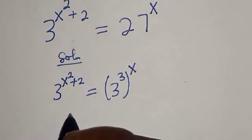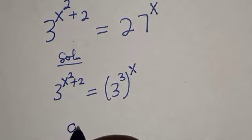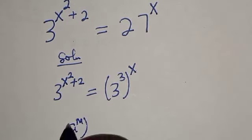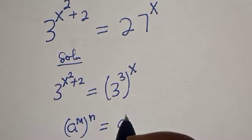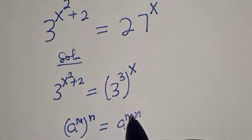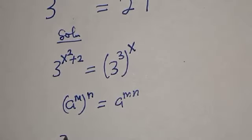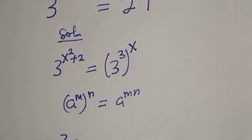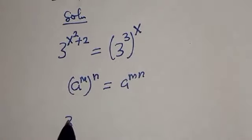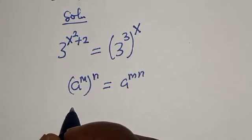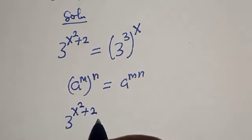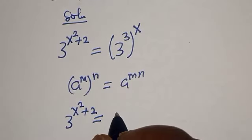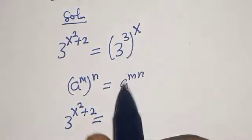Take note of this exponential rule: a to the power of m, to the power of n, is equal to a to the power of m times n. Then this gives us 3 to the power of s squared plus 2 is equal to 3 to the power of 3 times s.